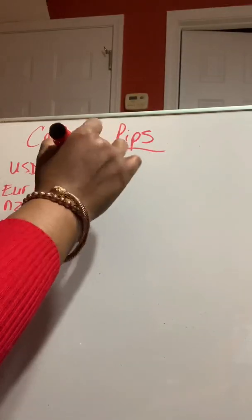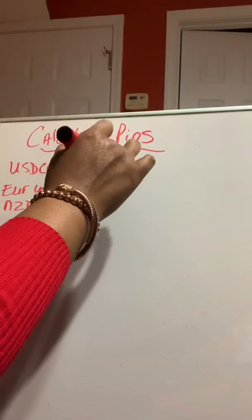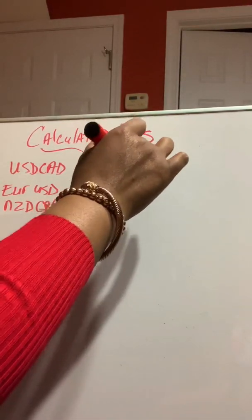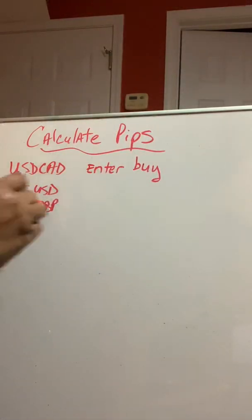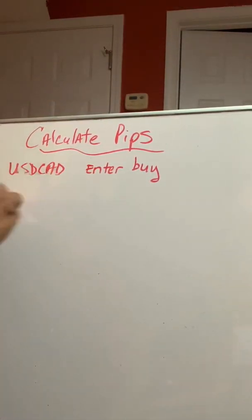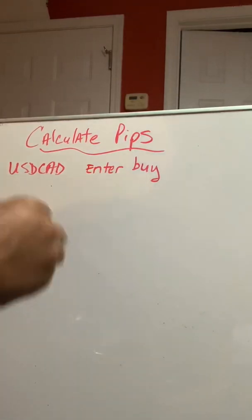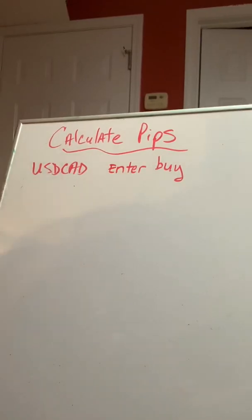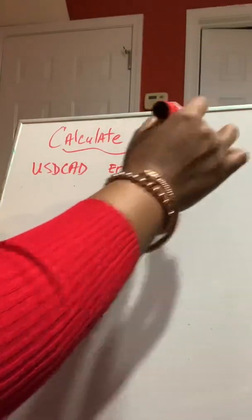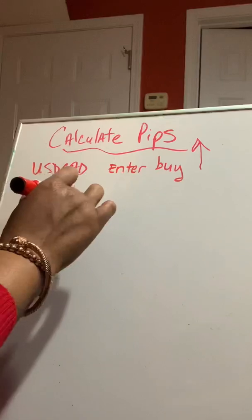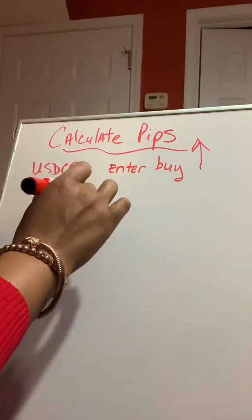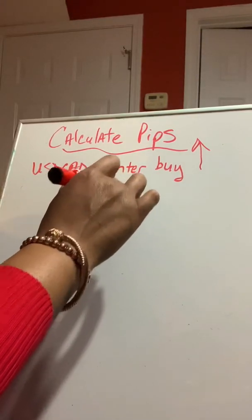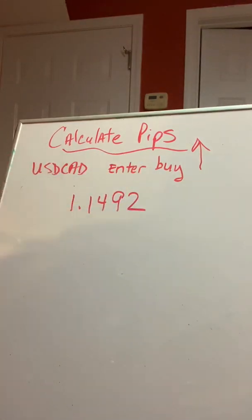So, let's say you enter the market on a buy. We know that when you enter the market on a buy, you pretty much want the market to go up. So, let's act like we're taking a trade on USD, CAD, and we enter in on a buy, we want the market to go up. So, we enter the market at 1.1492. Okay? This is where we entered entry.